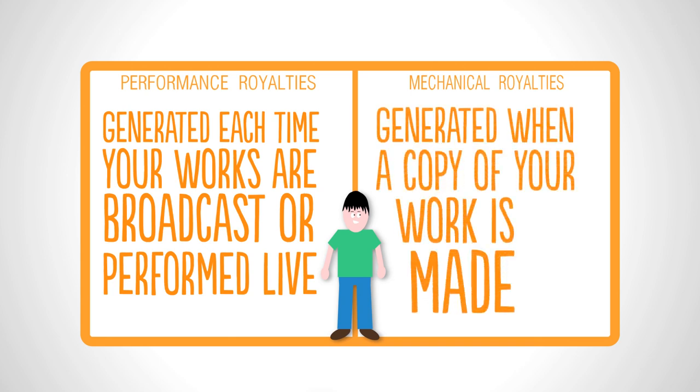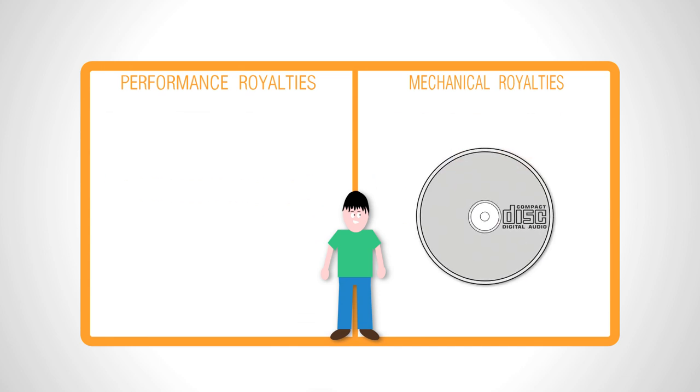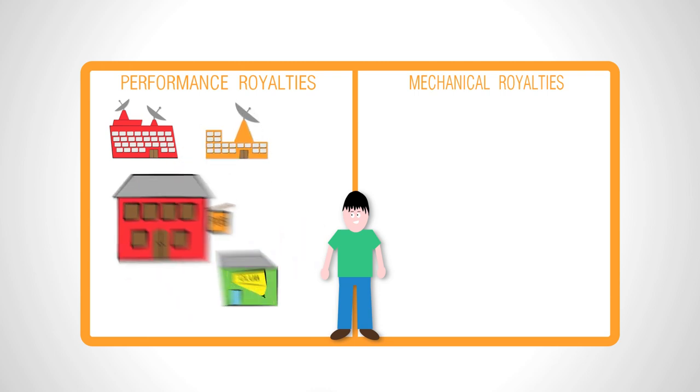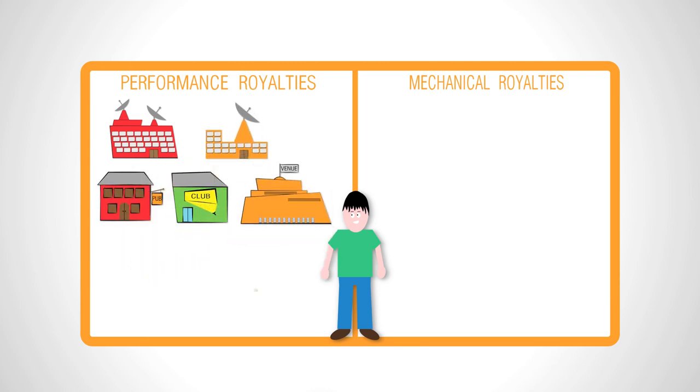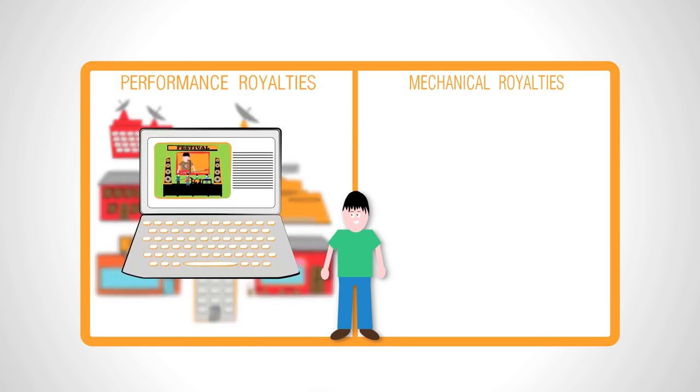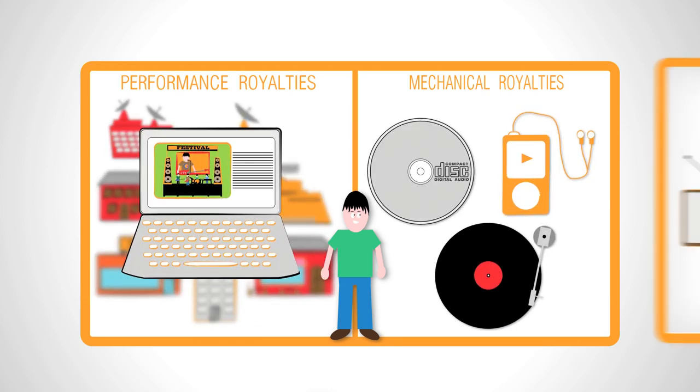For example, when a record label presses a CD. Some of the main royalty sources are TV broadcasters and radio stations, pubs, clubs and music venues, shops, offices and cafes, online streams, sales of your music and sync placements.